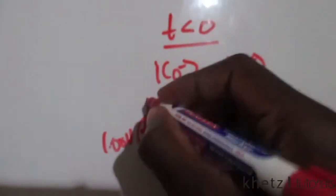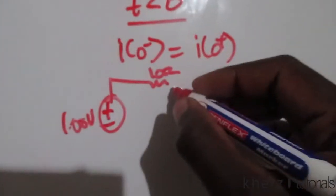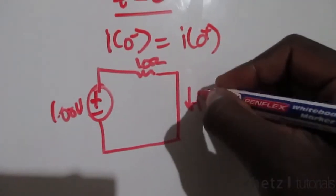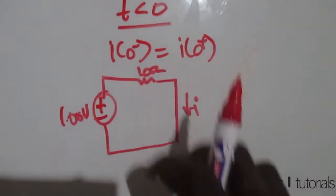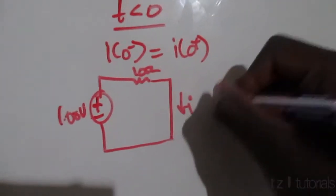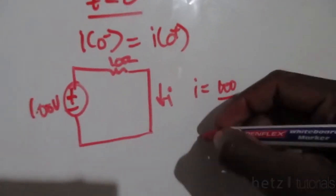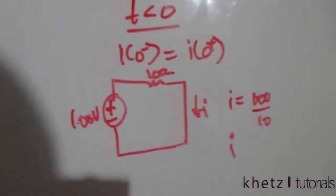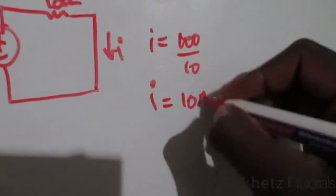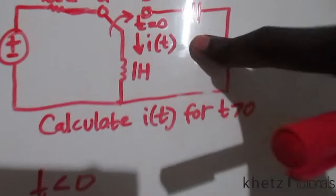For time less than zero, we have 10 ohms and a short circuit because we've reached steady state. Using Ohm's law, i equals 100 divided by 10, so the initial current i(0) equals 10 amperes.